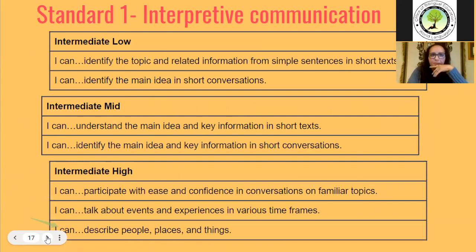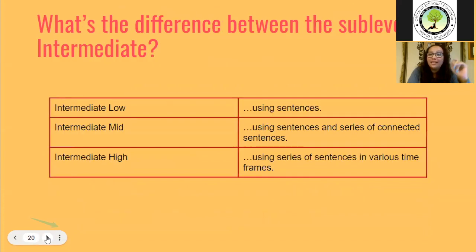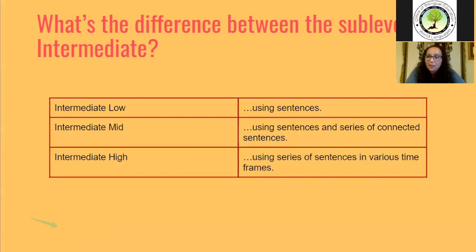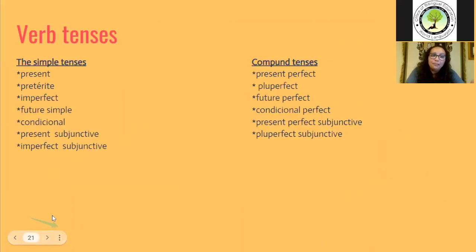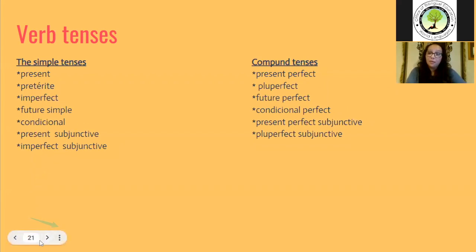This is a review of your standards for interpretive communication, interpersonal communication, and presentational communication. The most important thing I want everyone to walk away with is the difference between these sub-levels. So intermediate low, we're using sentences. Intermediate mid, we're using sentences with a series of connected sentences. And in intermediate high, we're using series of sentences in various timeframes. Towards the lower levels, we're presenting the simple tenses — most likely the present, the preterite, and the imperfect. While planning our units, we have an opportunity early in the year to review some of the lower tenses like the preterite and imperfect, and then plan accordingly for all the other tenses our students will need in order to effectively communicate in those various timeframes.